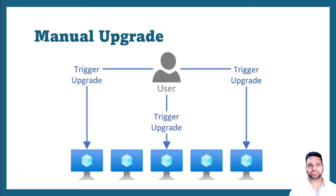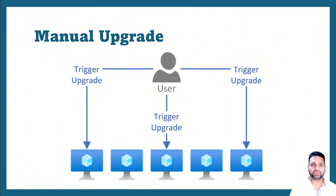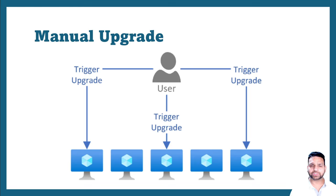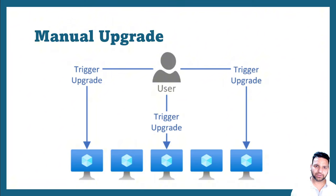Another option is manual upgrade. As the name suggests, manual upgrade means you initiate the trigger. If there are five virtual machines in the scale set, you can trigger either all five together or one at a time. If you have made any configuration changes, those instances will not be updated until you trigger an upgrade manually. Manual upgrade is ideal for the production environment where you want to control all the changes being done on the production virtual machines behind the scale set.